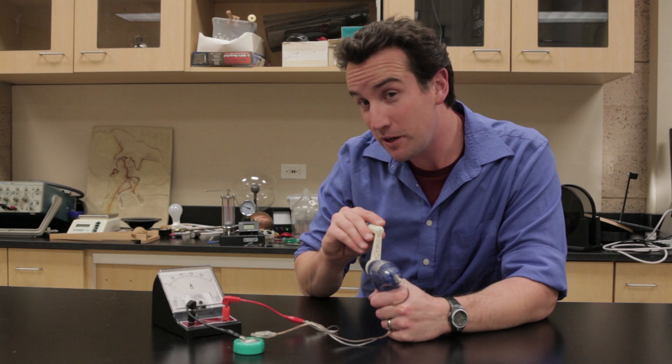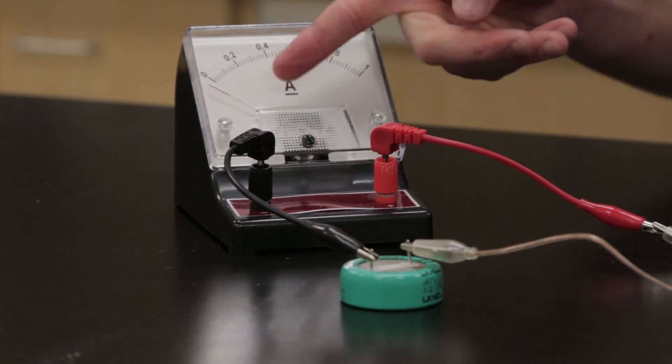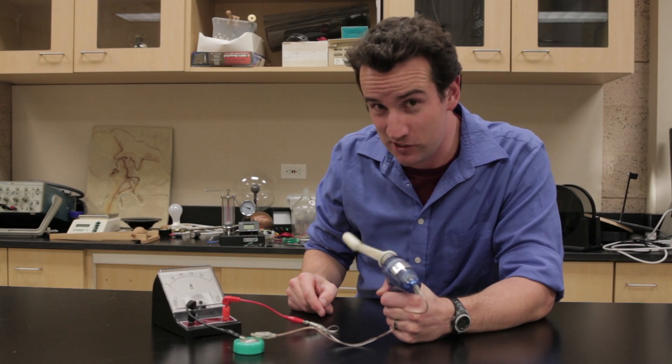Using an ammeter, we can see that the current is first flowing to the capacitor, but then back the other way when it's discharging.